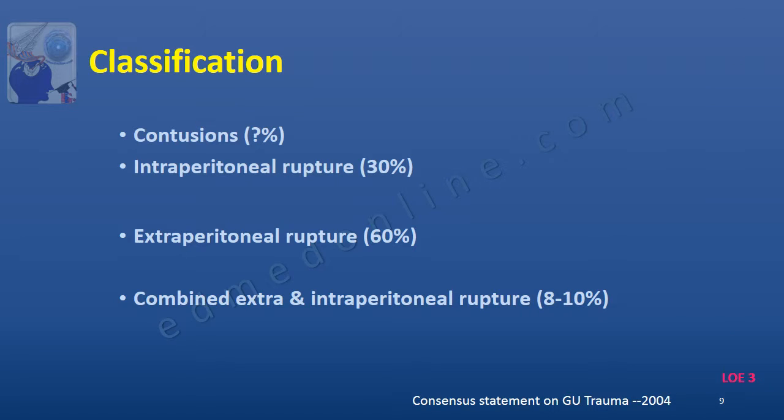Bladder trauma is classified as per the consensus statement on geourinary trauma 2004 into contusions, intraperitoneal ruptures which are seen 30 percent of the times, extraperitoneal rupture which is the most common at 60 percent of the times, and a combination of extra and intraperitoneal rupture seen 10 percent of the times.